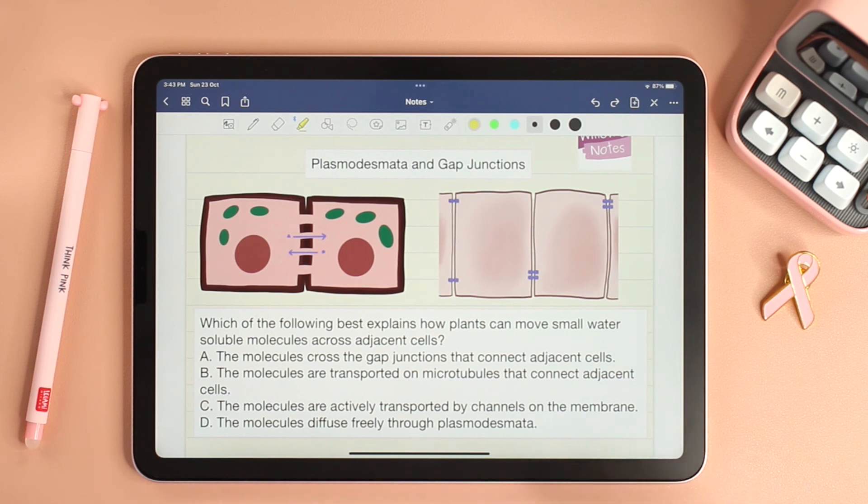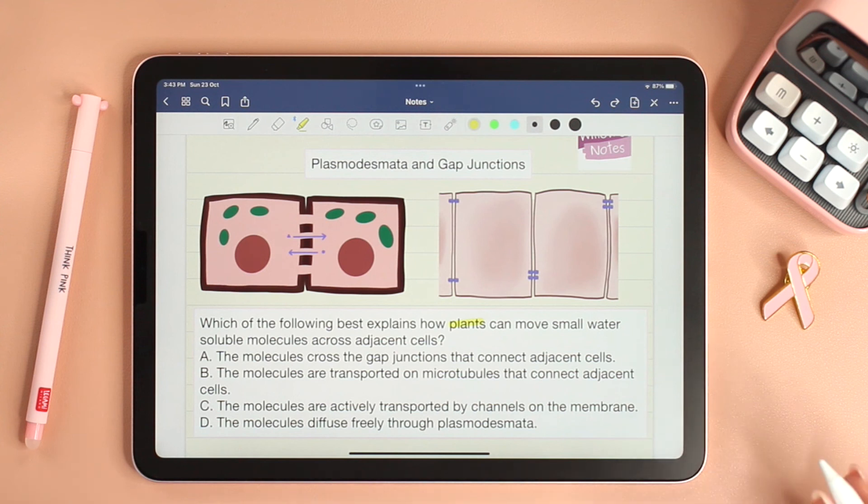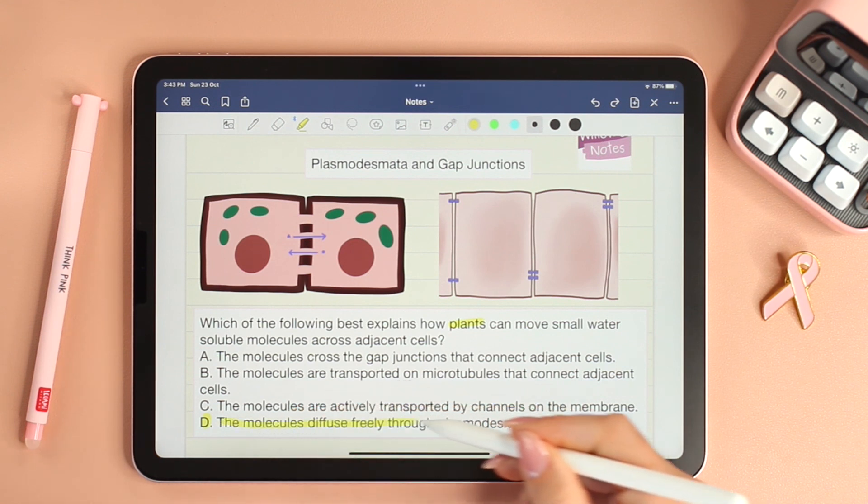In a question like this it's straightforward. We only have two options anyway: it's either plasmodesmata or gap junctions. And because this question is specifically asking about plants, then we're going to go with plasmodesmata, which is choice D. The molecules diffuse freely through plasmodesmata.